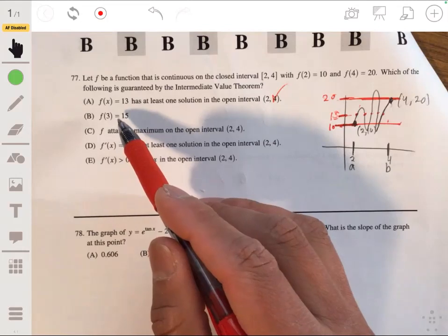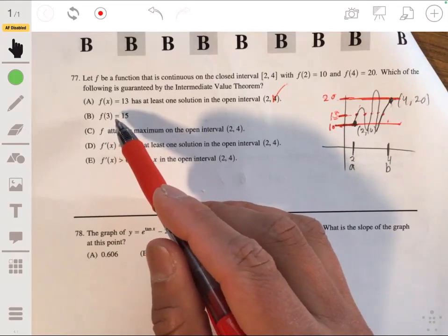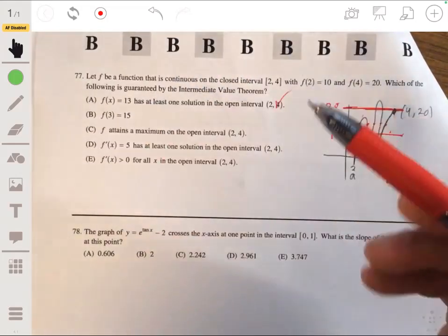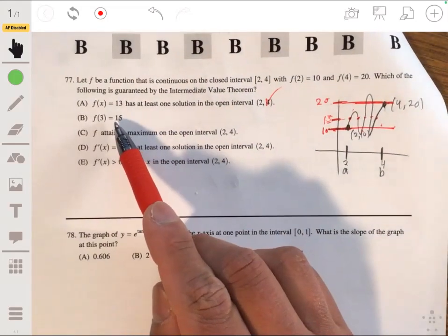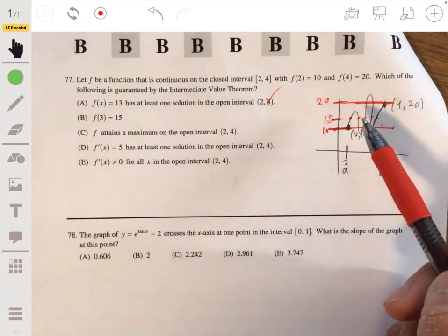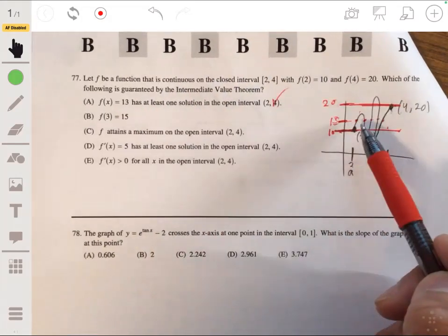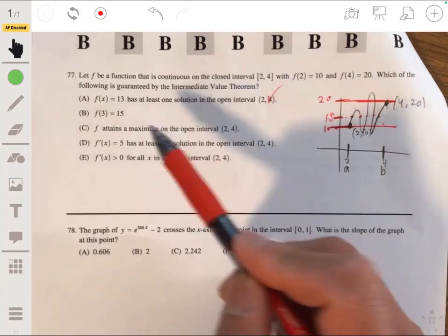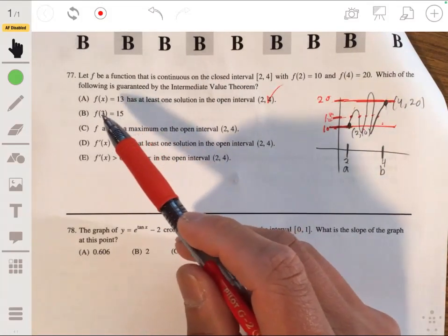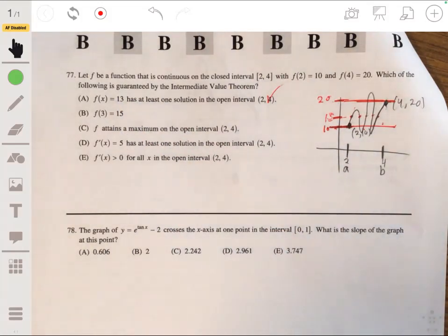So actually, the answer is actually a. Let me explain why it's not b. So it says f(3) = 15. Now, f(3) could be 15, but it's not that it has to be 15. f(3) could also be something else. But 15 has to occur between 2 and 4. It's just not b because it doesn't have to be 15 when x is 3. So the answer will be a.